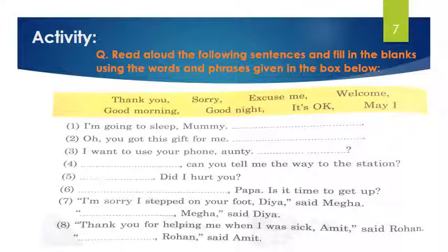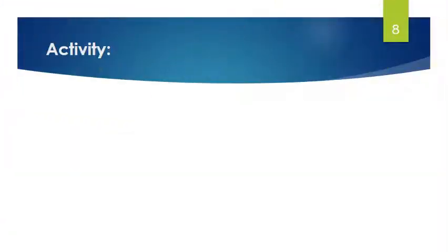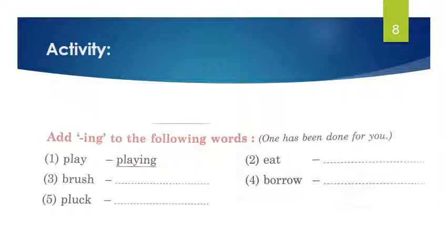Dear students, you have to write all these fill-in-the-blanks in your classwork notebook, and read and learn them. Now see your next question: 'Add -ing to the following words.' One has been done for you. The first word is P-L-A-Y, 'play.' We add -ing to get P-L-A-Y-I-N-G, 'playing.' Like that, you have to add -ing to the following words. This is your exercise and your homework. I hope you understood this lesson. Thank you.